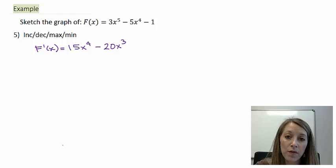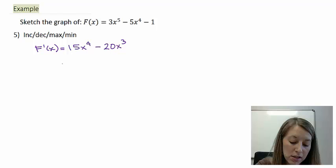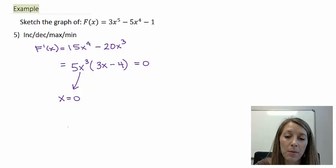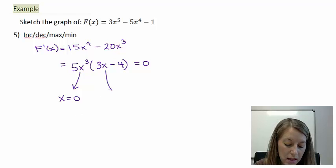We want to set this derivative equal to 0, so it would be best to factor it out. So I can take out a 5 and an x^3. That leaves me with 3x - 4. So when I do set this equal to 0, this part gives me the solution of x = 0, actually 3 times multiplicity 3. And if I set this one equal to 0, that gives me x = 4/3.